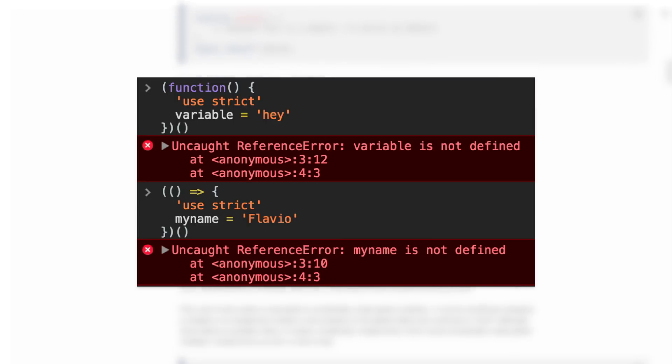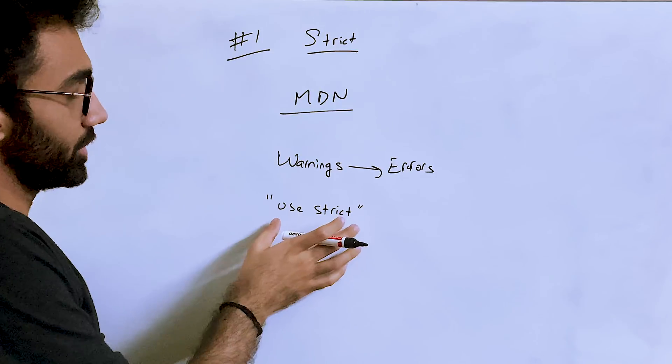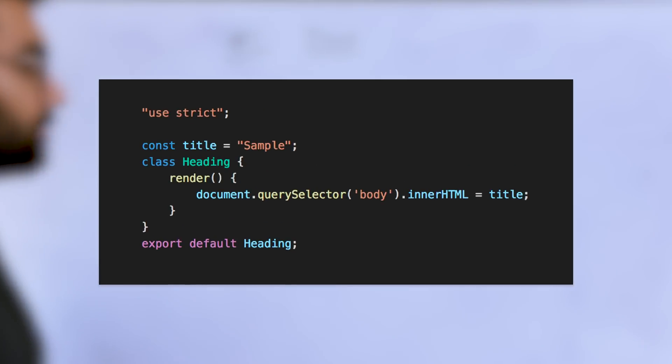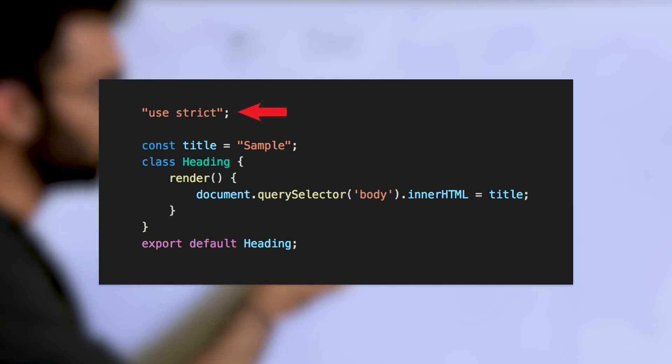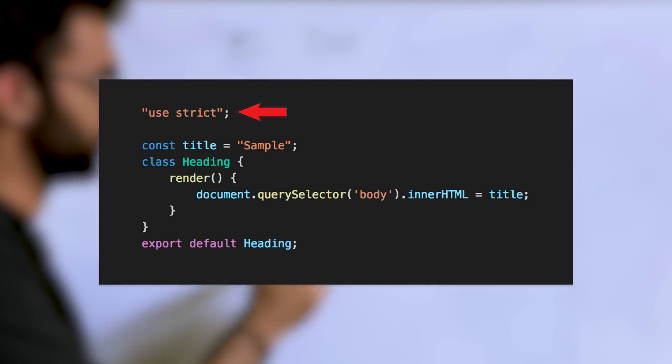Enabling strict mode is not difficult. All you have to do in your JavaScript file is use the "use strict" mode at the top of your JavaScript file inside double quotes or single quotes.